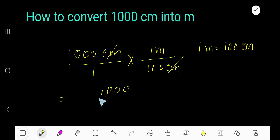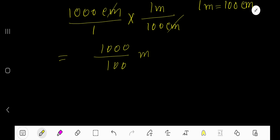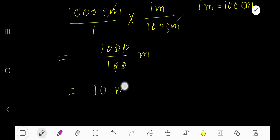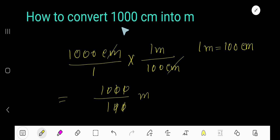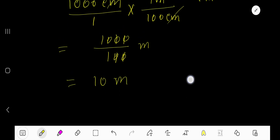So 1000 divided by 100 — now cancel this zero, this zero, this zero, this zero — so we are getting 10. 10 divided by 1 means 10. So 1000 centimeters equals 10 meters.